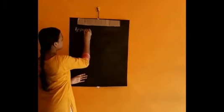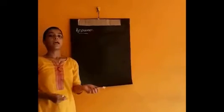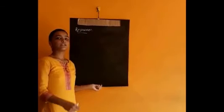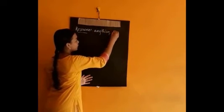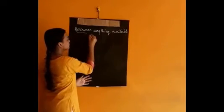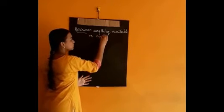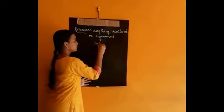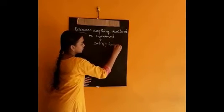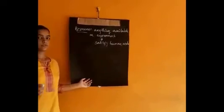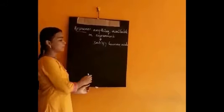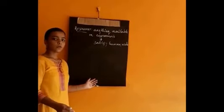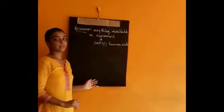Let's look into what Resources are. Resources is anything that is available in the environment which can be used to satisfy our needs — anything that is available in our environment which is used to satisfy human needs. This blackboard, that black chart paper, a paper — anything can be classified as a resource. For anything to be classified as a resource, it should satisfy three conditions.